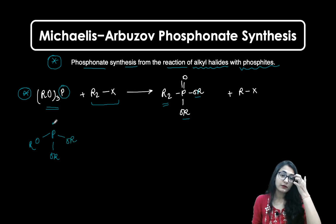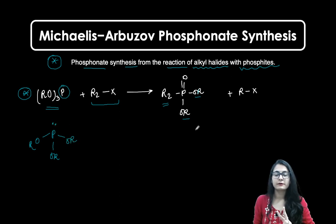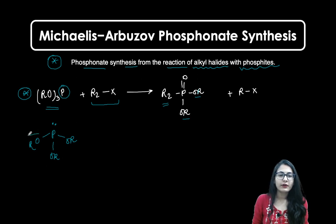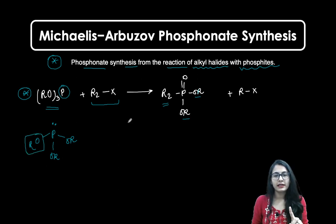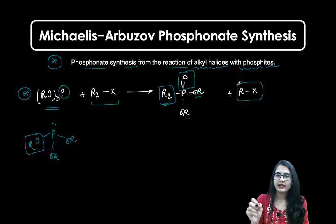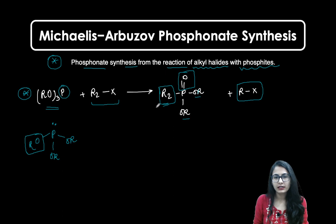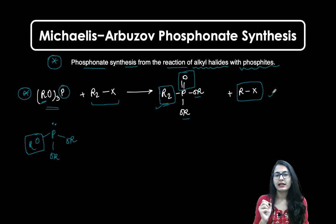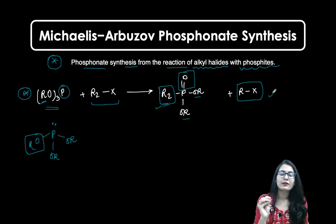What is the difference between the phosphite and the phosphonate? One of the OR groups just got replaced with an alkyl group, and the other difference is that we now have a double-bonded oxygen. Finally, you get an alkyl halide as the byproduct — now a different one. The R2 group got connected to phosphorus and one of the R groups left with the halide. I hope you will be able to write the mechanism yourself — just stop the video and try it.